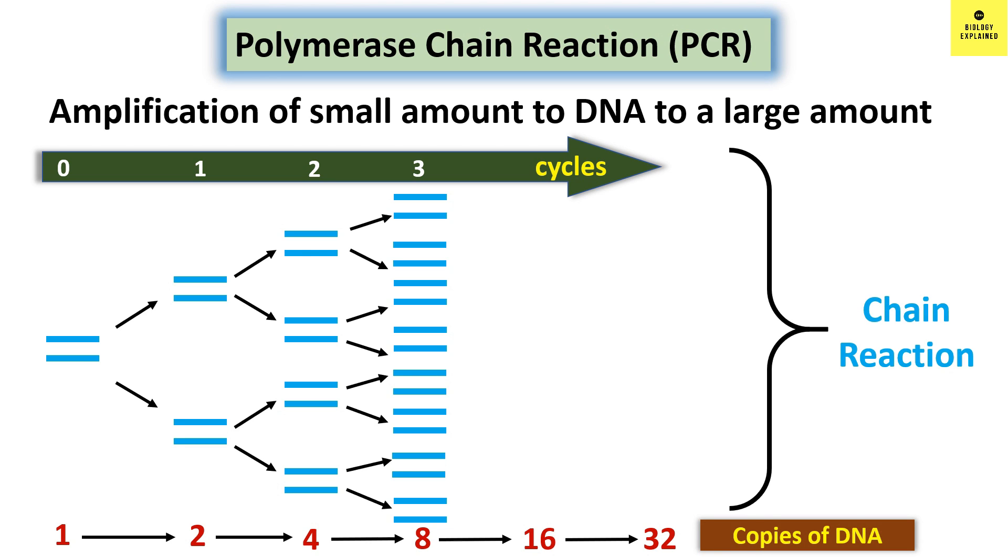As you can understand, this is a chain reaction and the amount of DNA gets doubled each time and this is performed with the help of an enzyme called DNA polymerase. So it is called polymerase chain reaction or PCR.